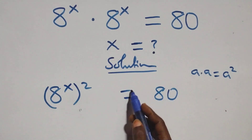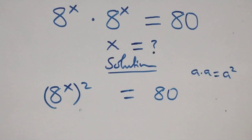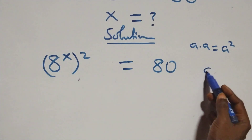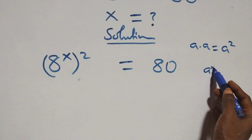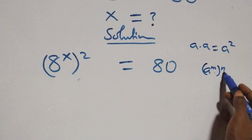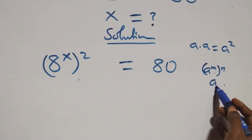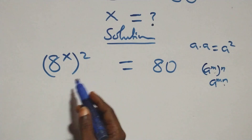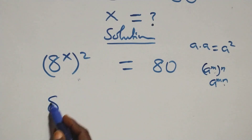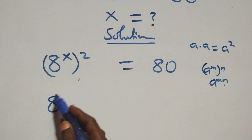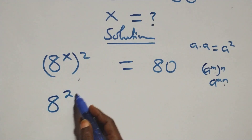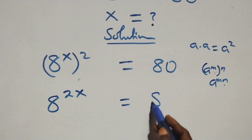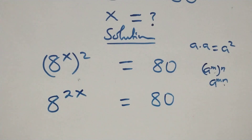On this side, when we have a raised to power m, all raised to power n, this is the same thing as a raised to power m times n. So the power multiplies and we have 8 raised to power 2x equals 80 on this side.